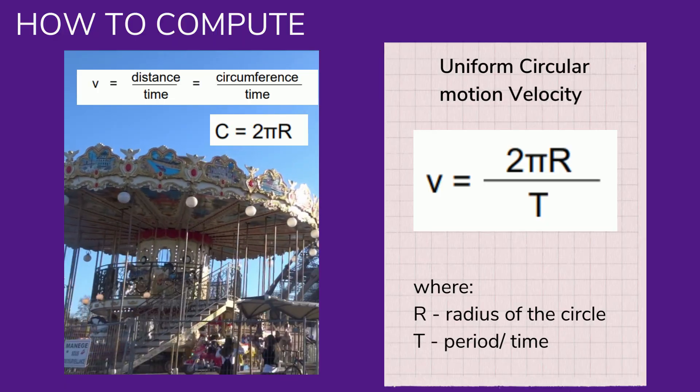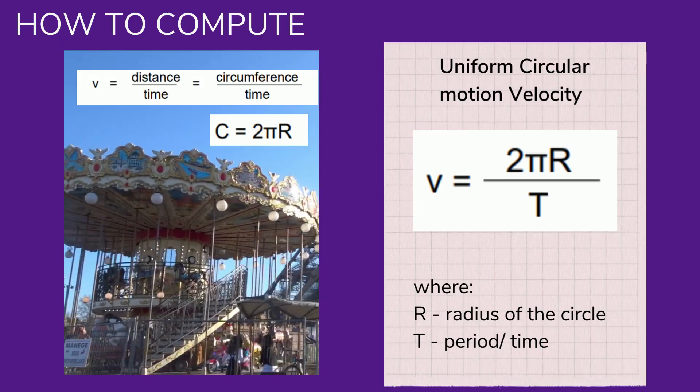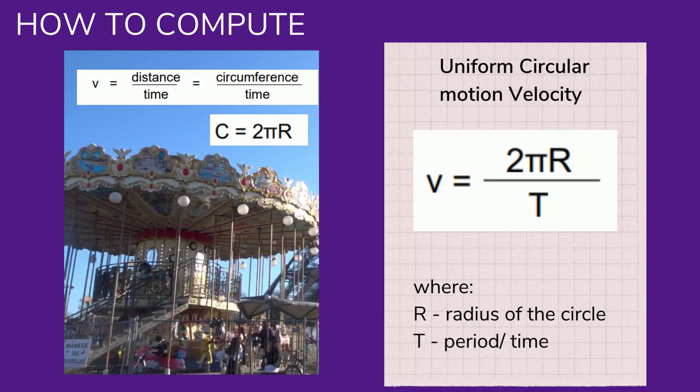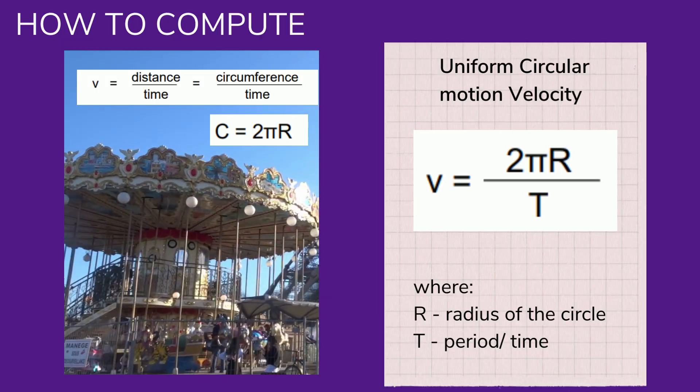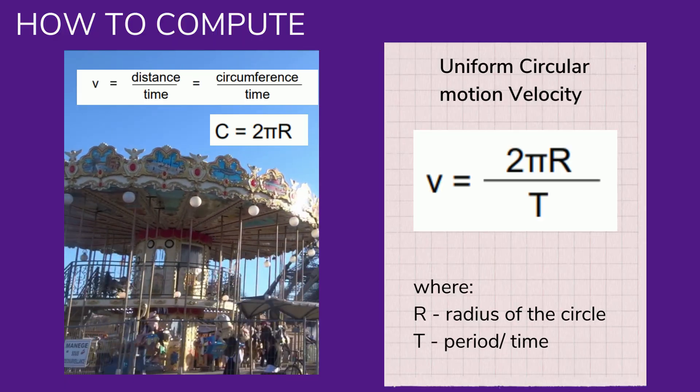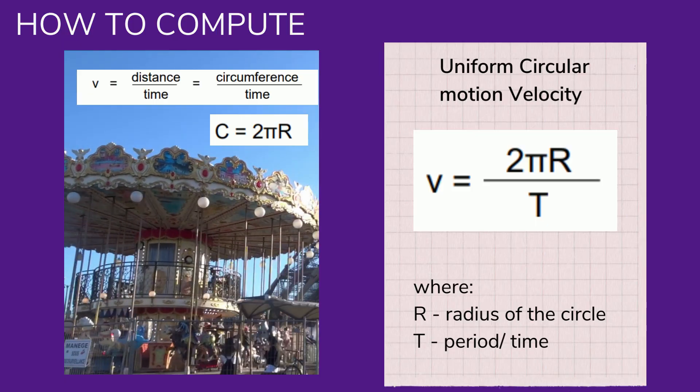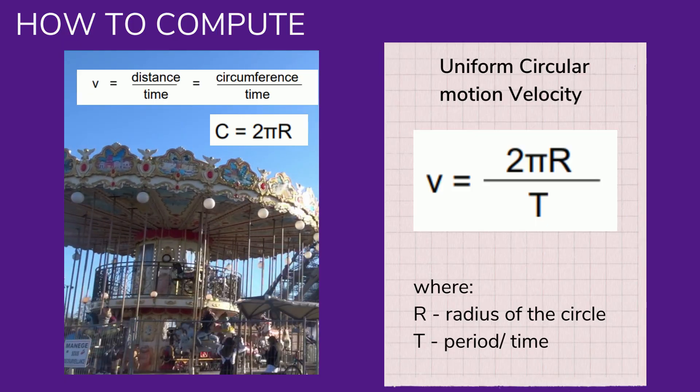The distance of one complete cycle around the perimeter of a circle is known as the circumference. The circumference of any circle can be computed using the radius according to the equation C = 2πR.